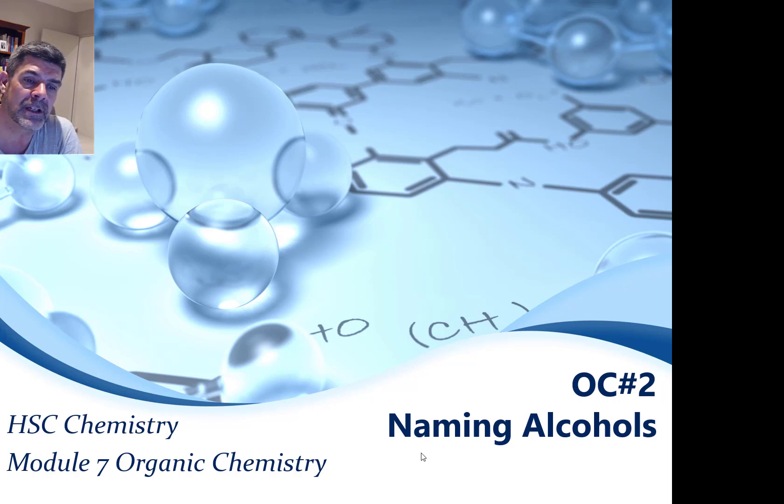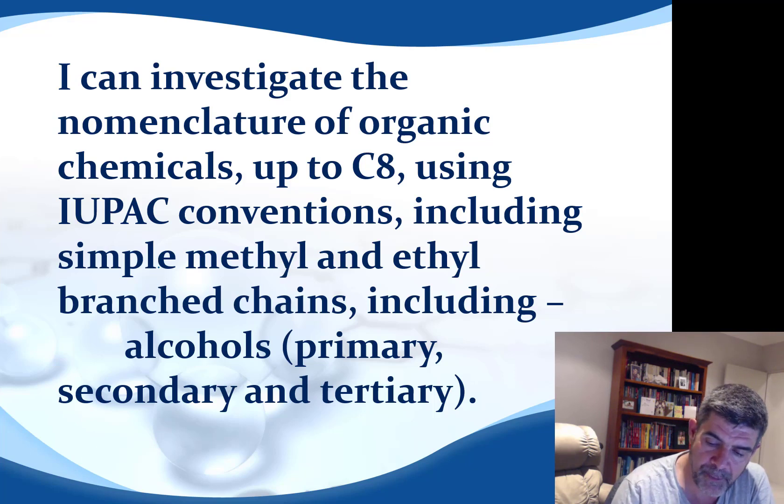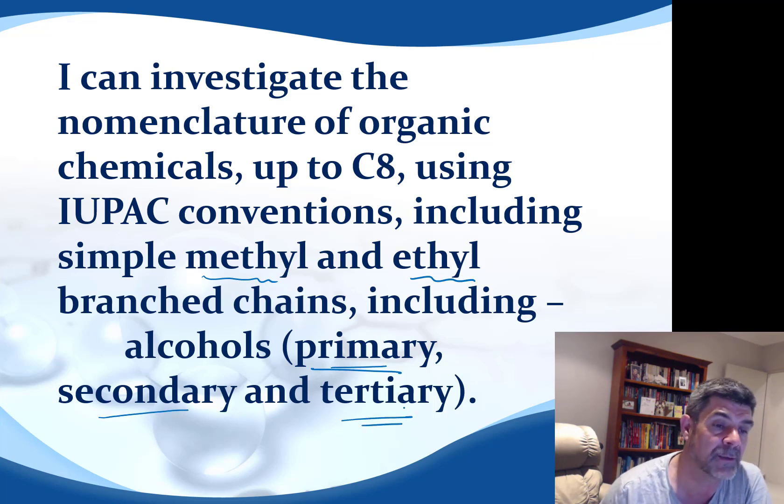This is the second in the series on nomenclature, and in this one we're going to look at naming the alcohols. In this particular video, we're going to be concentrating on how we name different types of alcohol groups, where we have both the methyl and ethyl branch chains, and focusing on the three groups of alcohols: primary, secondary, and tertiary. So obviously we're going to have to have a look at each of these three types to be able to contrast between them.